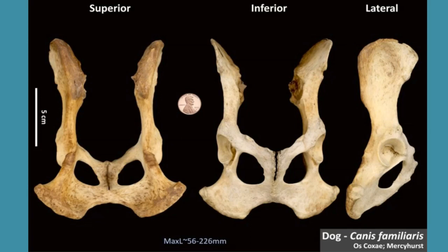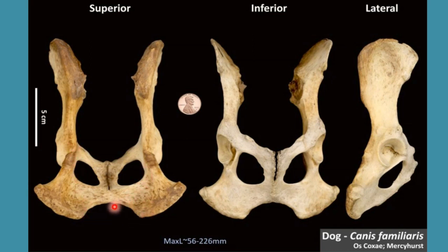Welcome to VetLuck. I am going to discuss the anatomy of Os Coxae of dog. Os Coxae consists of right and left hip bones, and these both hip bones are joined at the symphysis pelvis. The symphysis pelvis is an immovable joint which is formed between these two hip bones.